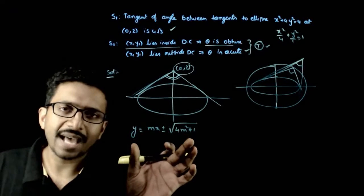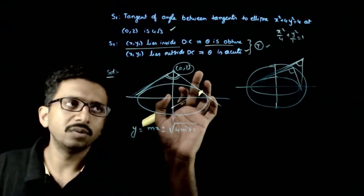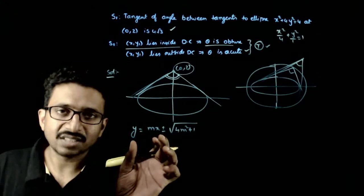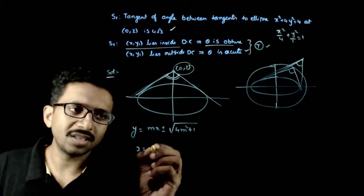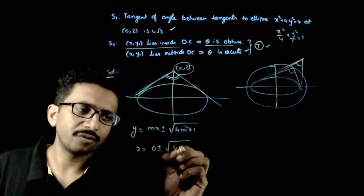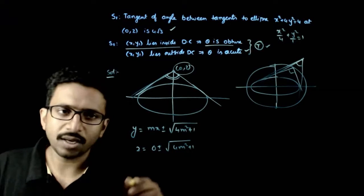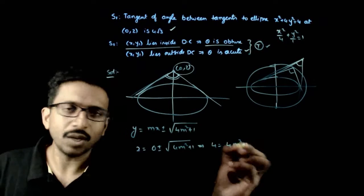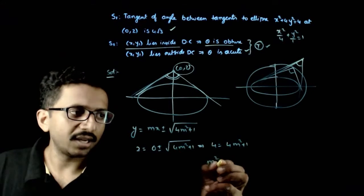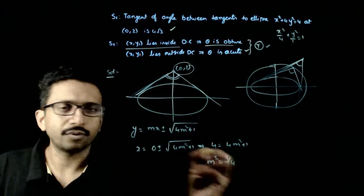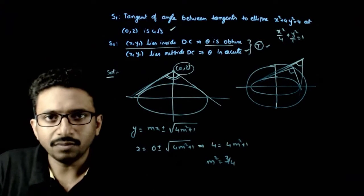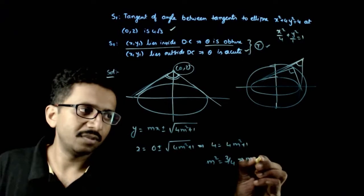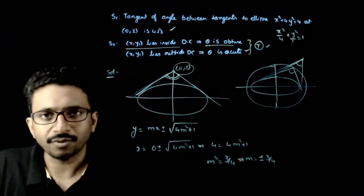If this tangent has to pass through (0, 2), then substituting: 2 = 0 ± √(4m² + 1). Squaring both sides gives 4 = 4m² + 1, so m² = 3/4, which means m = ± √3/2, that is ± √3/2.